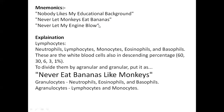The percentages are very simple. You can learn them as: 60, 30, 6, 3, 1. So neutrophils are 60%, lymphocytes 30%, monocytes 6%, eosinophils 3%, and basophils 1%.